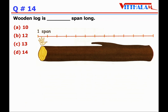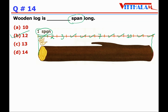Question 14: wooden log is blank spans long. यहां पर wooden log को equal distances में mark किया गया है, and each unit is one span। Counting: 1, 2, 3, 4, 5, 6, 7, 8, 9, 10, 11, 12. Answer is B — the wooden log is 12 spans long. सारे numbers लिखने की ज़रूरत नहीं है, otherwise time जाएगा।